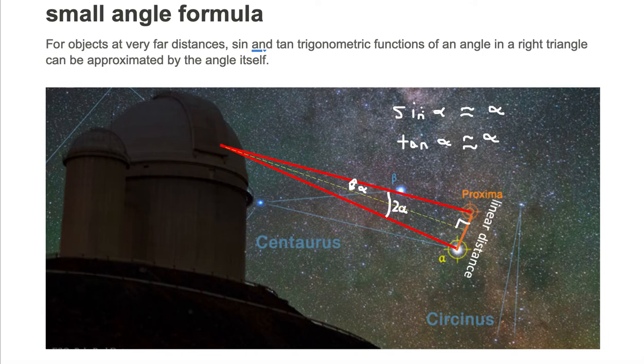That's what the small angle formula is. So for example, we have our two stars, Proxima Centauri and Alpha Centauri.